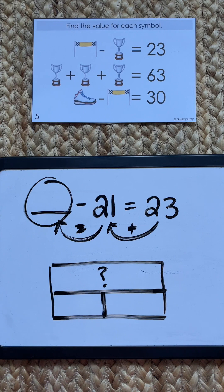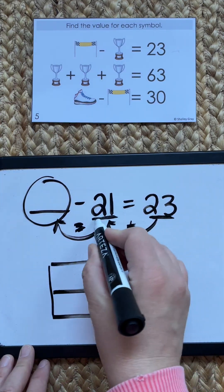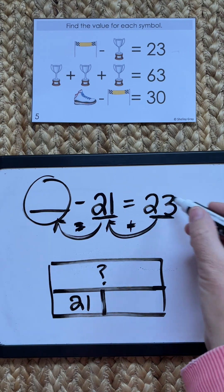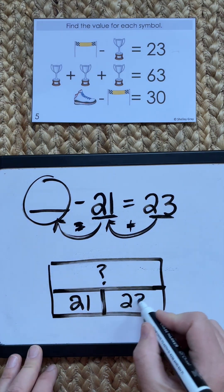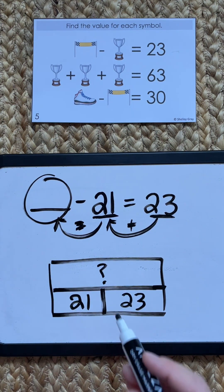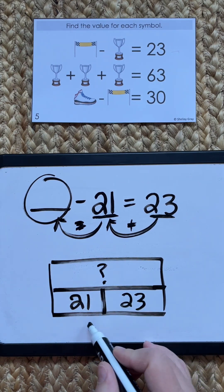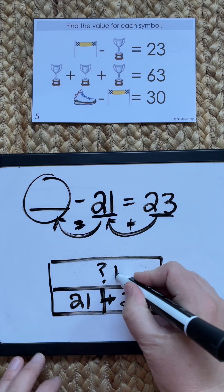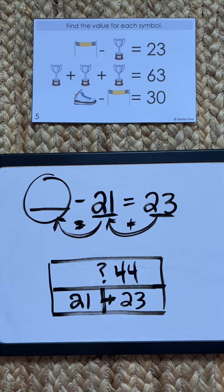In this case, the whole is our unknown - we don't know that part. We do know the two parts. We know the part that we took away was 21 and we know the part that we have left is 23. Now it becomes really clear that to figure out the whole, we're just going to add these two parts: 21 plus 23. So our whole is going to be 44.